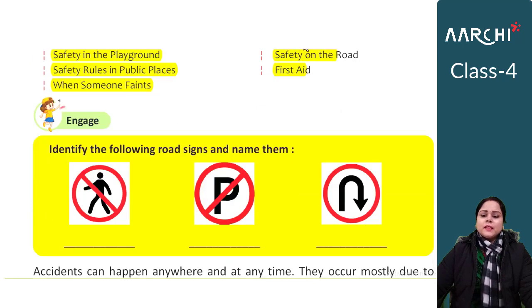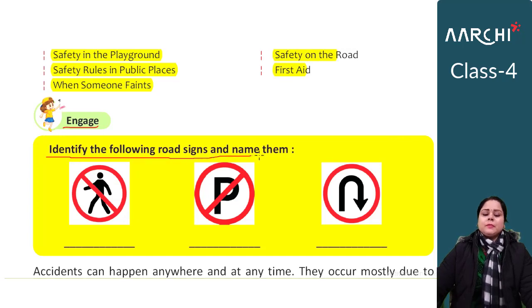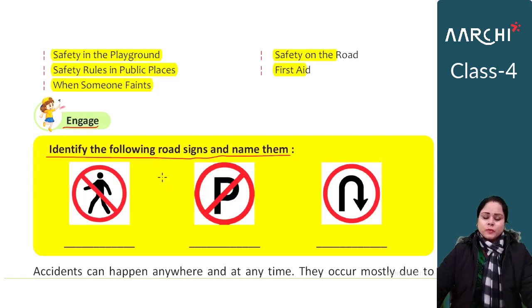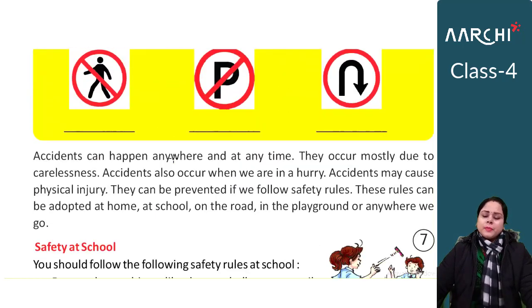Now let's look at the 'In Case' section. In the 'In Case' section, we need to identify the following road signs and name them. Some road signs are given here, and you need to look at these road signs and write their names — what purpose they are used for.